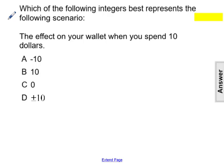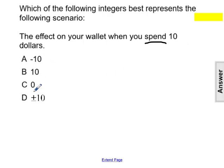Which of the following integers best represents the following scenario? The effect on your wallet when you spend $10. The clue word in this statement here is 'spend.' When you spend money, you lose it — it's in the negative direction. Therefore, we're looking for a negative integer, which is negative 10.